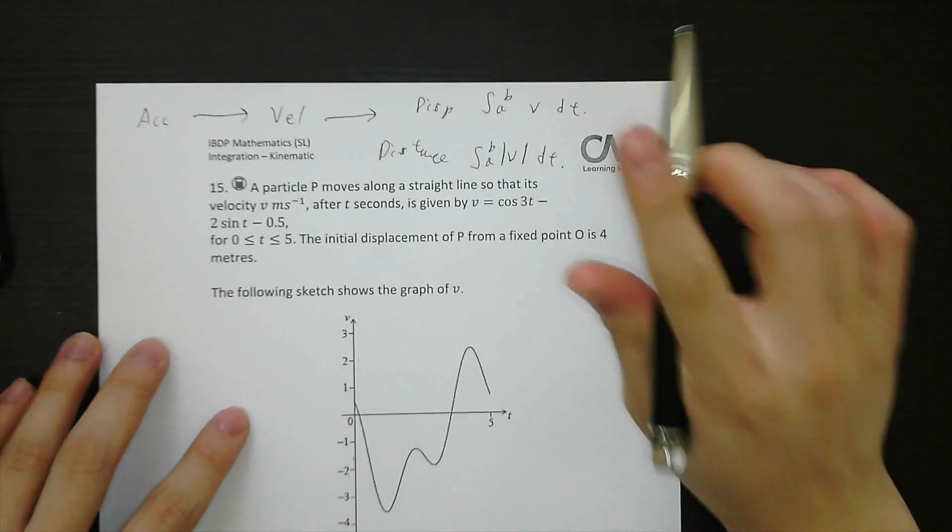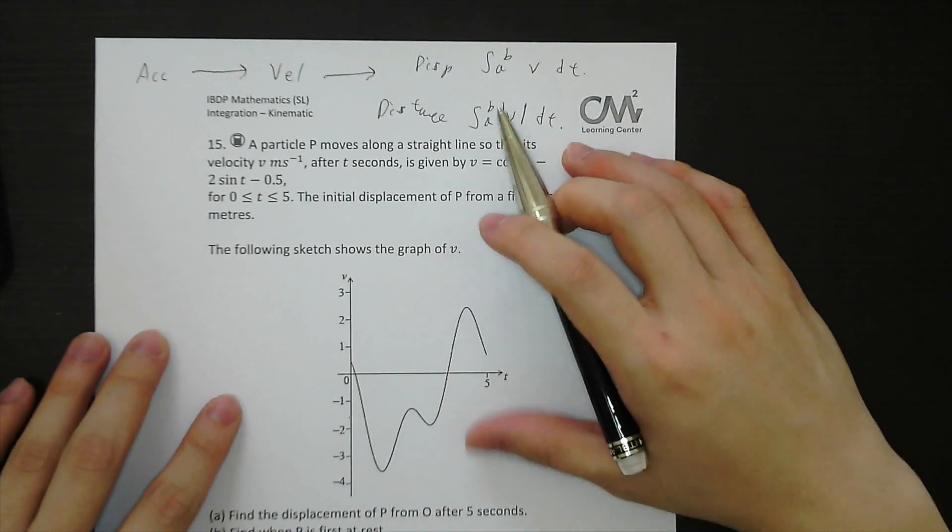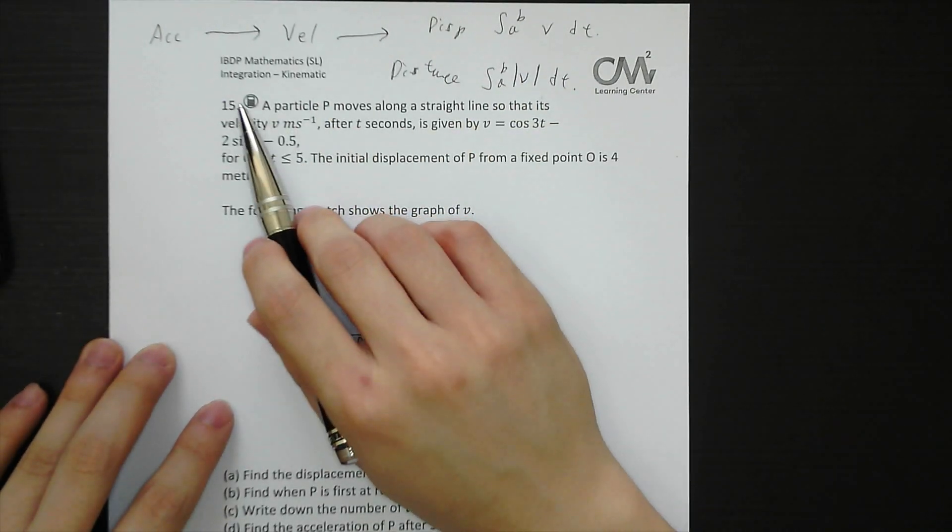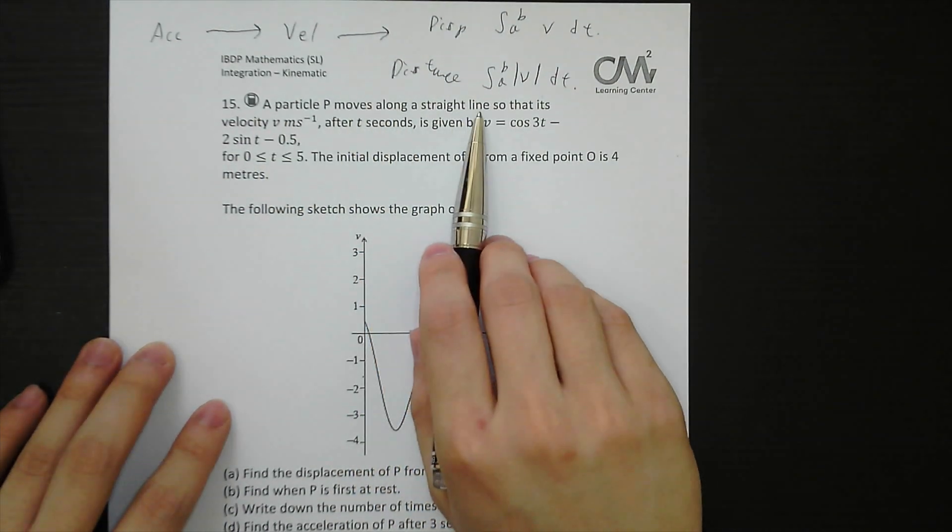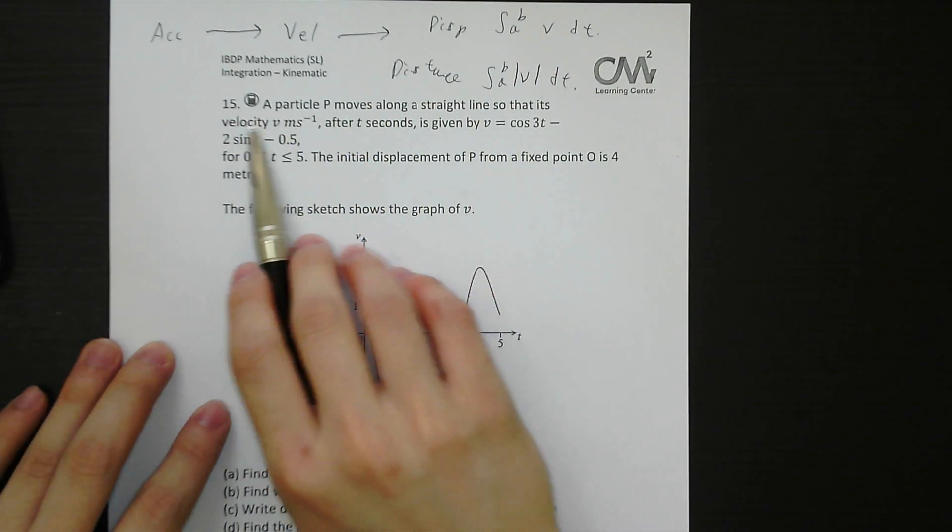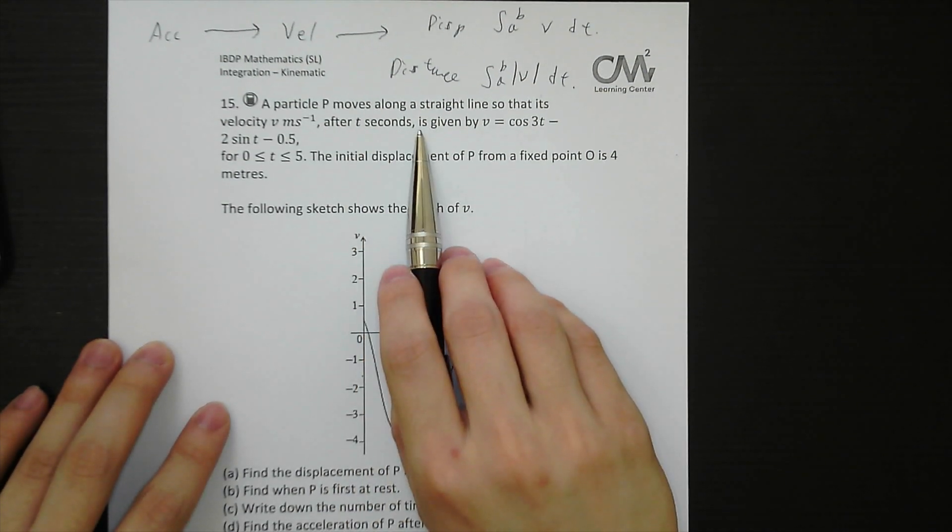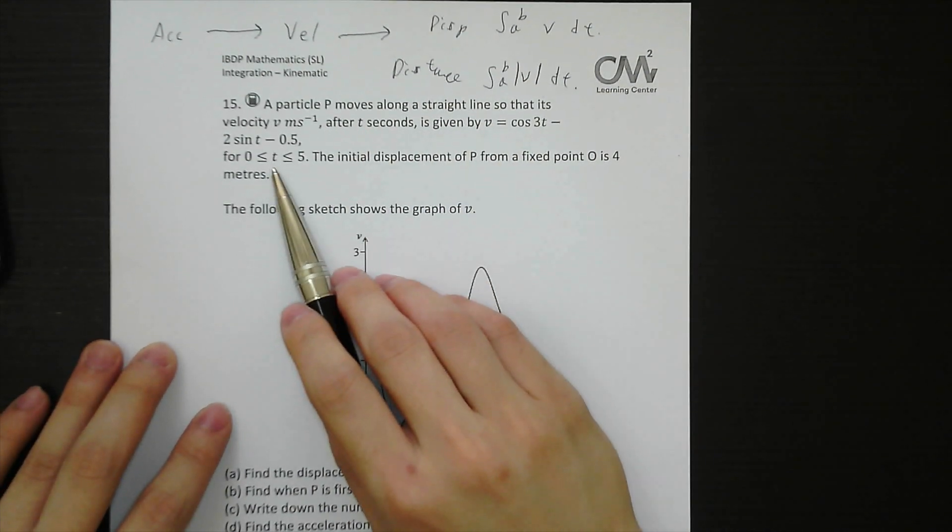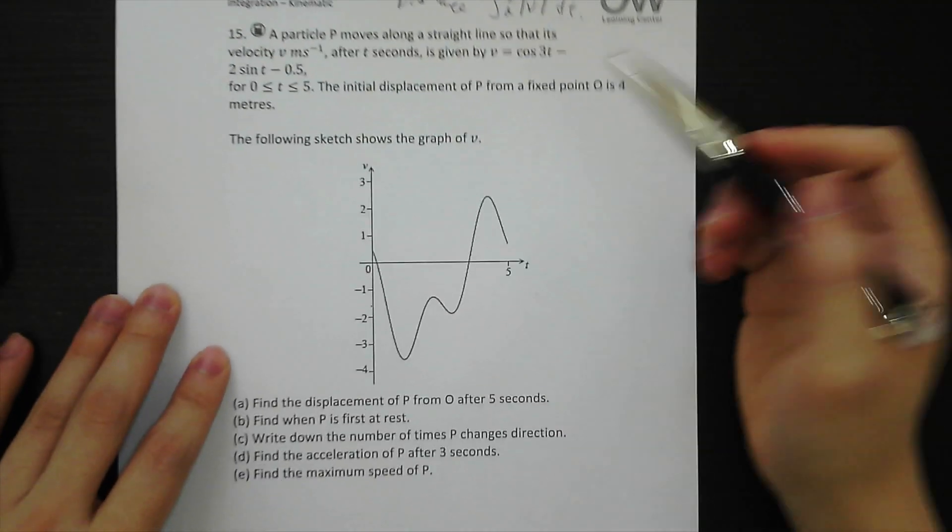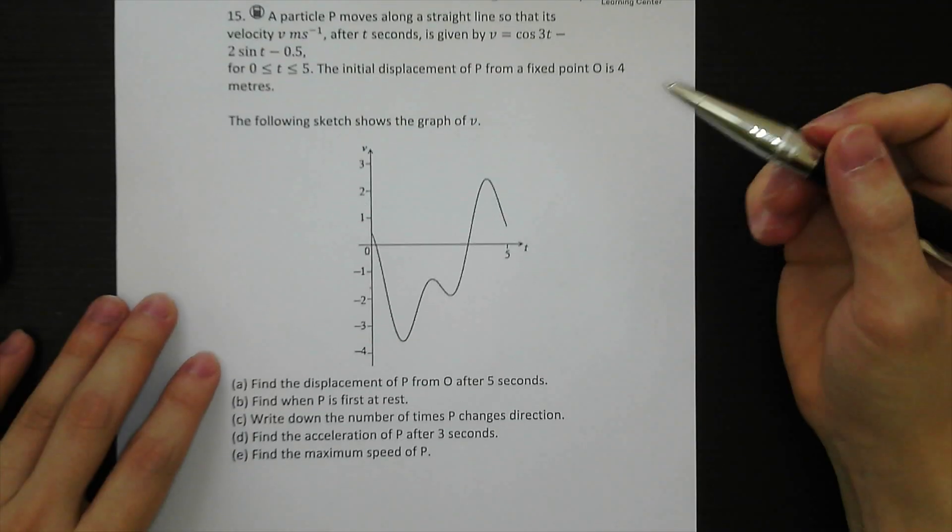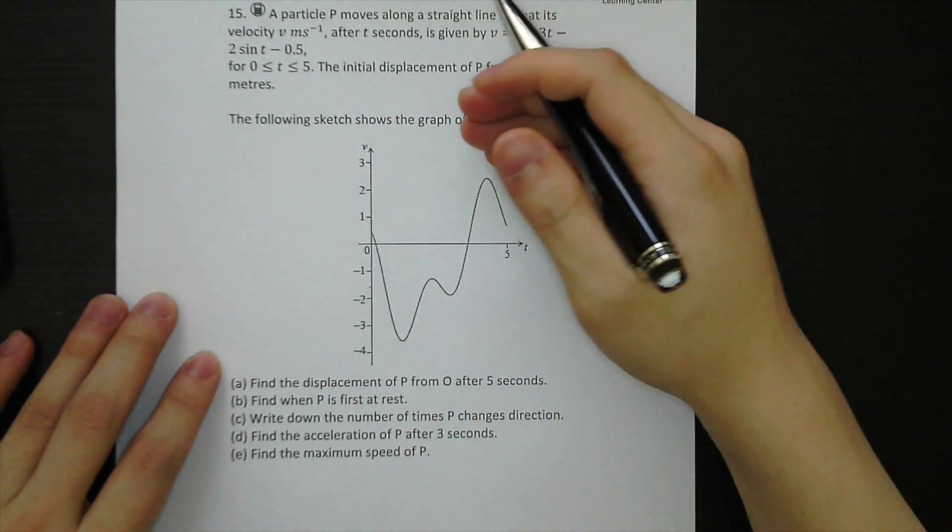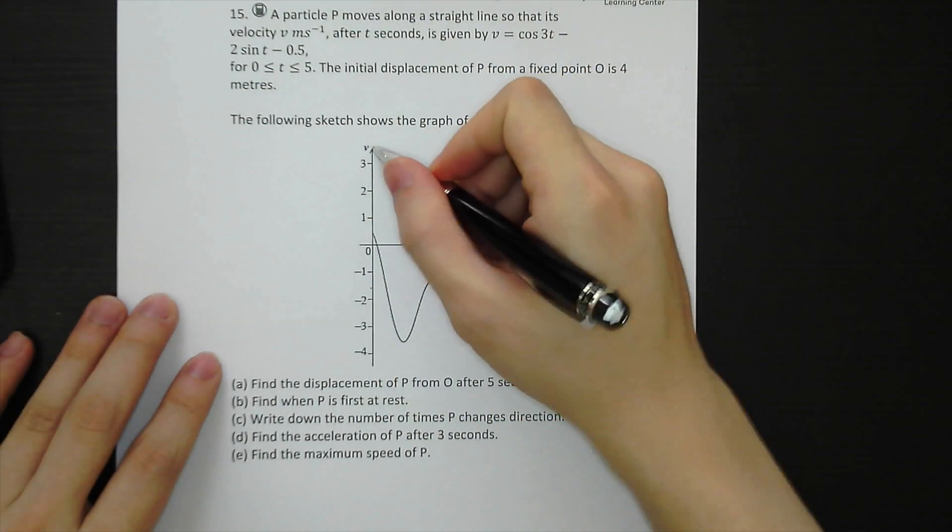That's a very key thing you need to know in this topic. This is a paper 2 question with calculator. A particle P moves along a straight line so that its velocity after t seconds is given by these functions. t is between 0 to 5. The initial displacement of P from a fixed point O is 4 meters. The following graph shows the velocity against time functions.